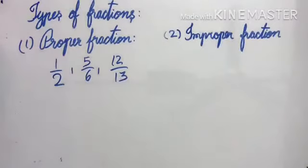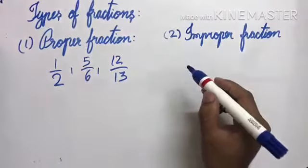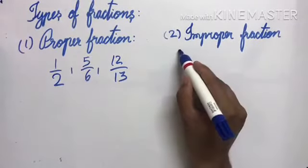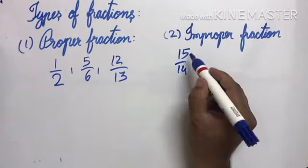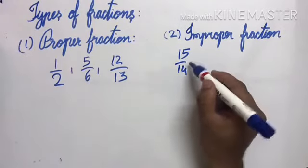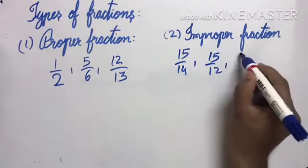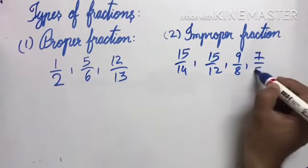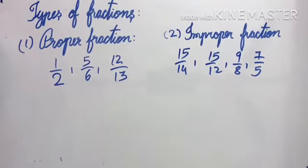Another type is improper fraction. A fraction whose numerator is either greater than or equal to the denominator is called an improper fraction. The upper number is greater than or equal to the lower number. Examples: 15/12, 9/8, 7/5 — all these are improper fractions.